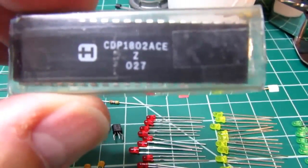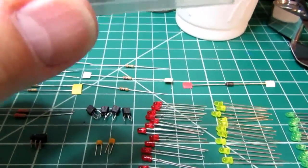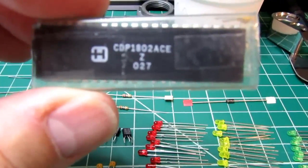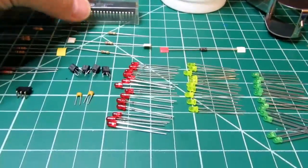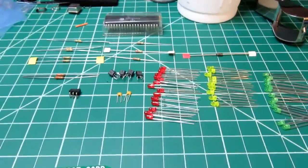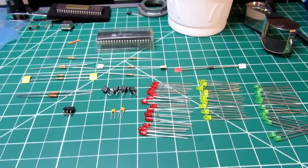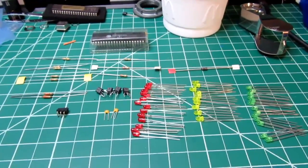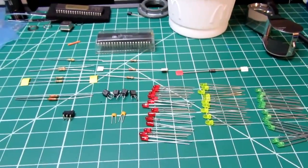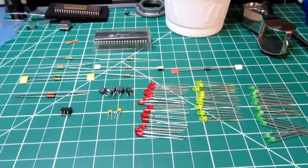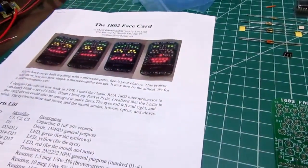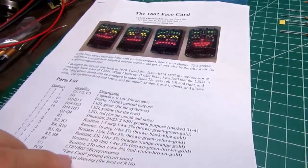And of course, the heart of the thing, the 1802 microprocessor. This is an old Harris part. One nice thing about Lee Hart's 1802 kits is they come with the processor. There's a four-page manual that comes with the kit listing the parts, assembly instructions, theory of operation, and a schematic on the back.